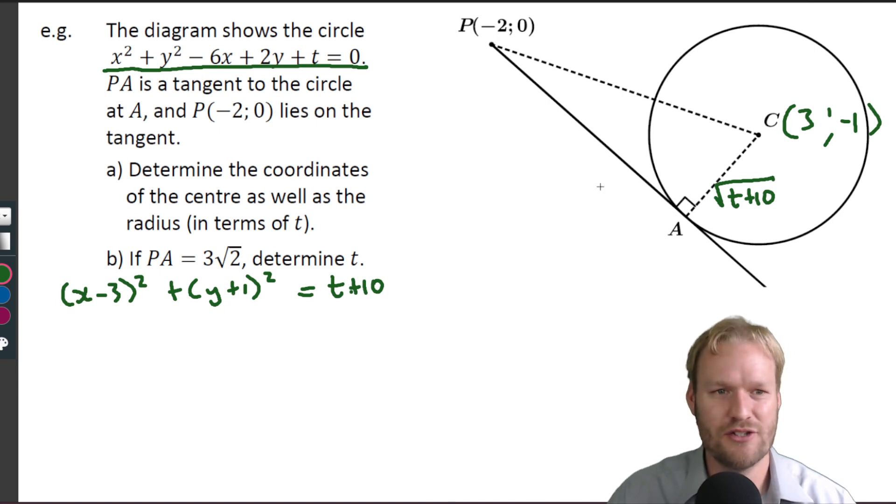Okay, so anyway, what are they asking? P(-2, 0) touches at A. Determine the coordinates of the center as well as the radius in terms of t. Oh, well done! Overachieving already.